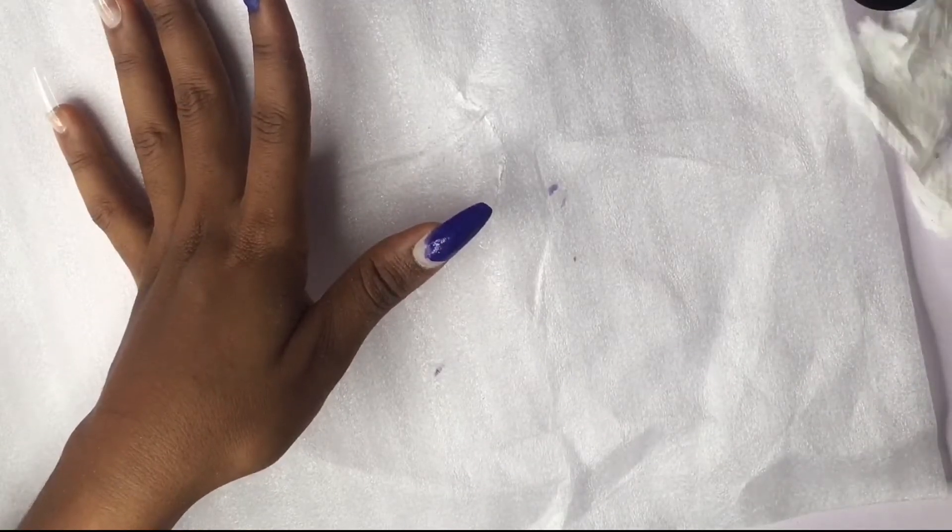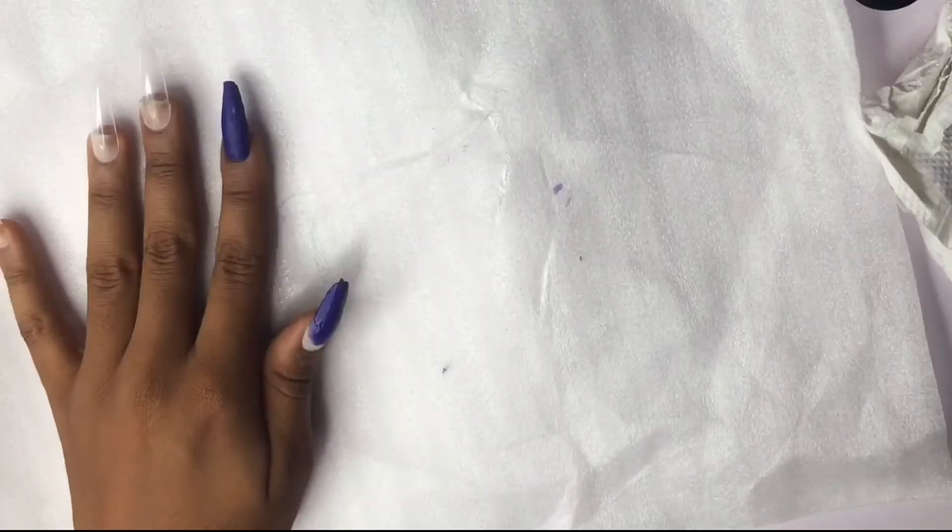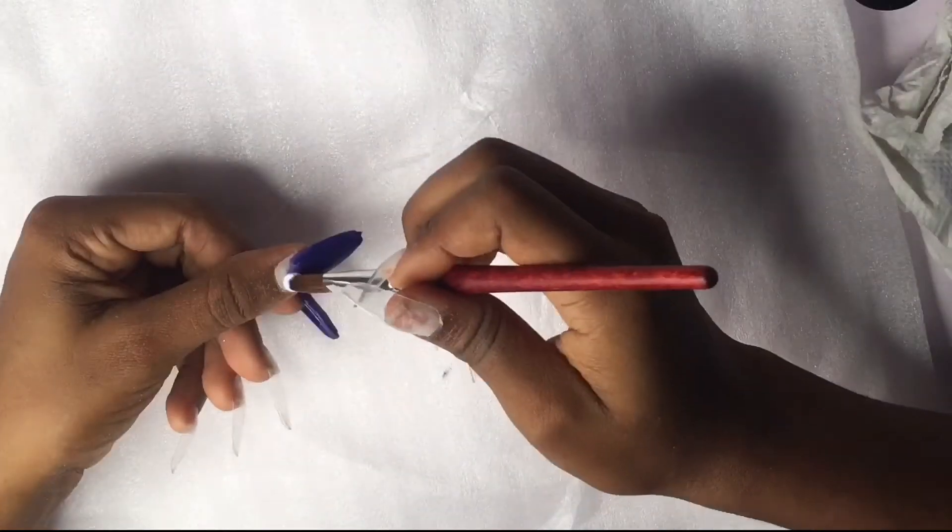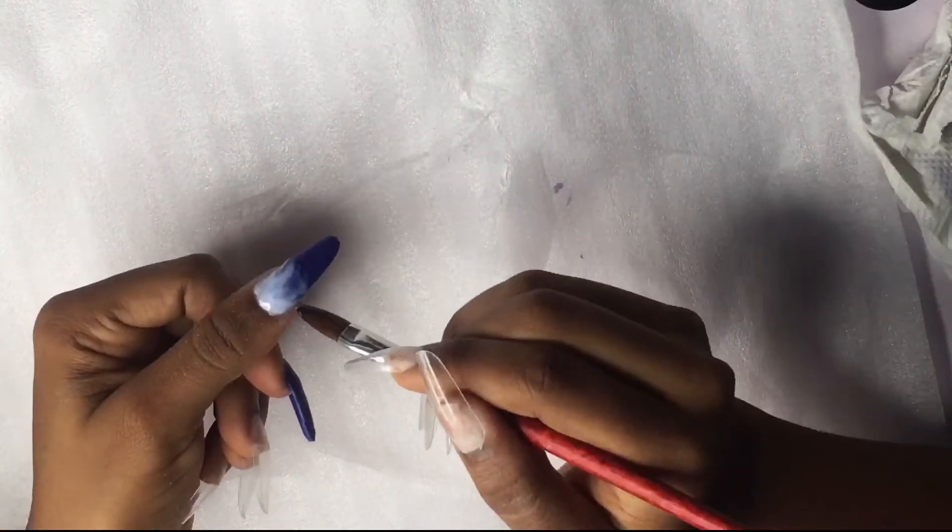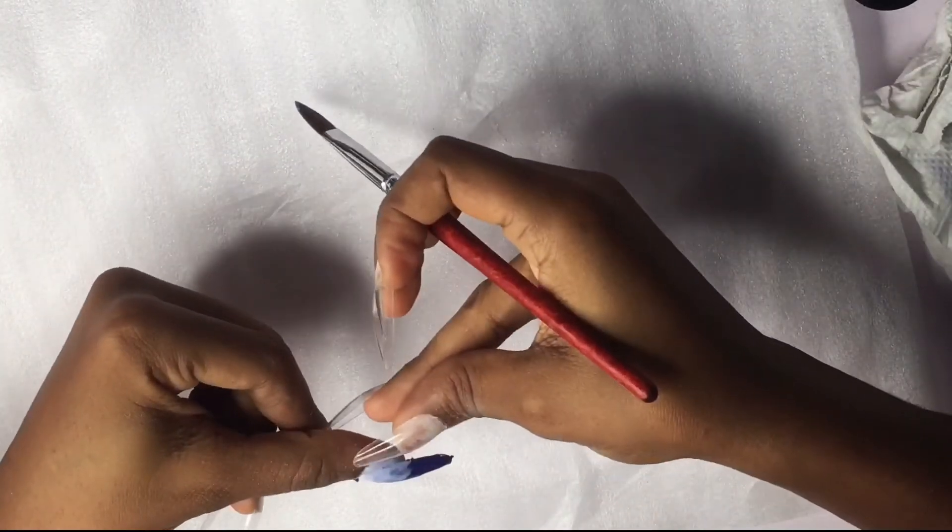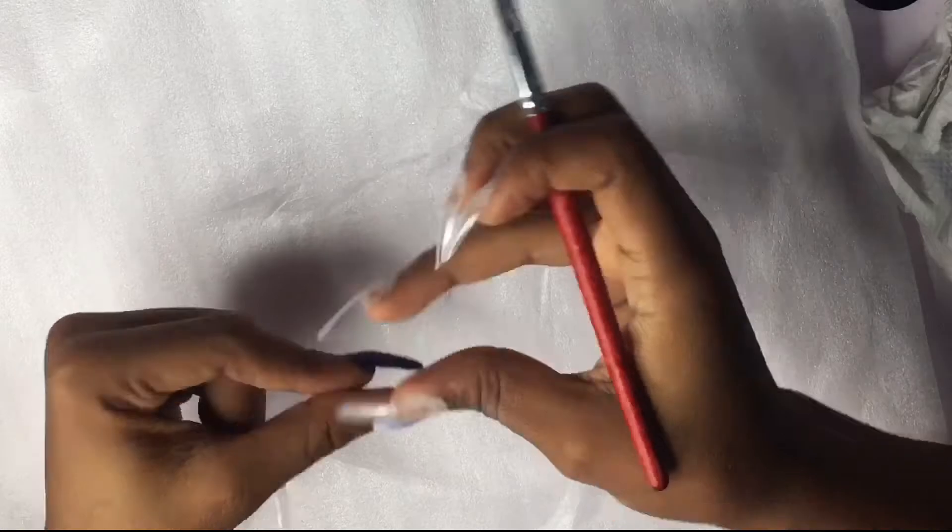So I'm doing an ombre nail there. I'm going to go in with the white. This white is very chalky, like it is very chalky, so I struggled with it.